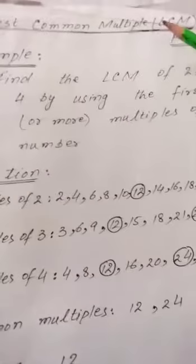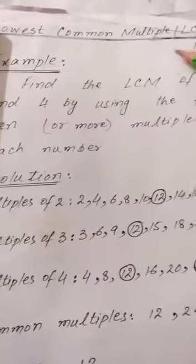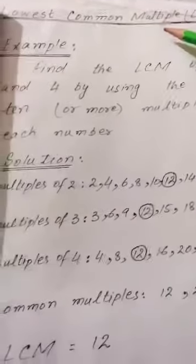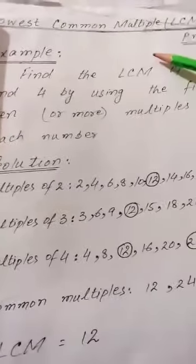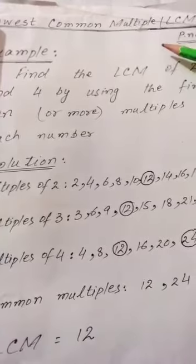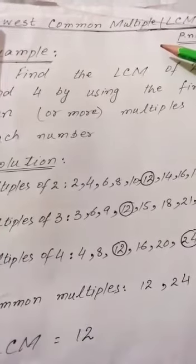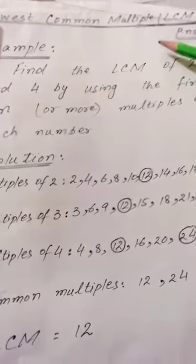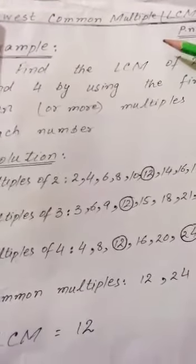We will discuss the LCM. LCM stands for Lowest Common Multiple. The smallest common multiple of two or more numbers is the lowest common multiple.